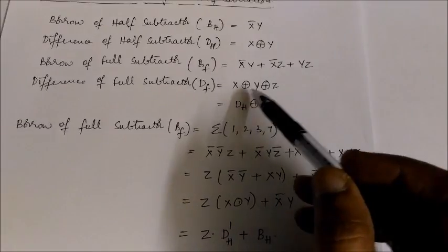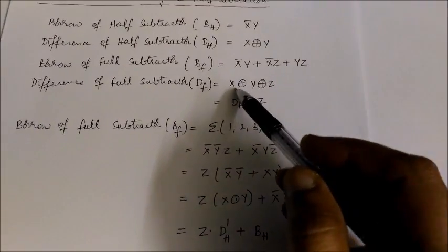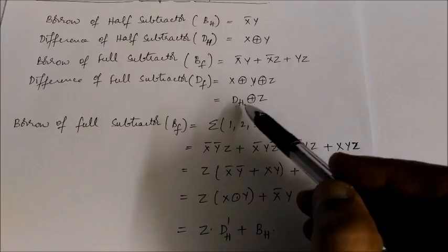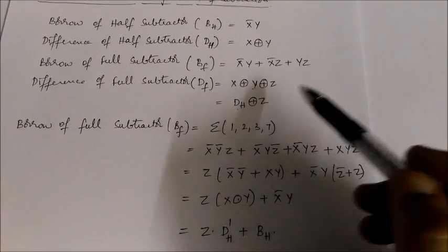Here when we are considering x XOR y XOR z, this x XOR y I am representing as dh. So this can be represented as dh XOR z.